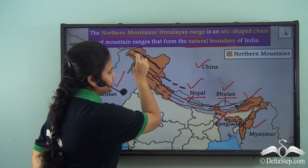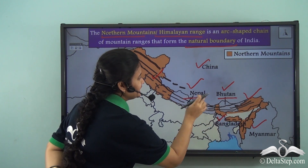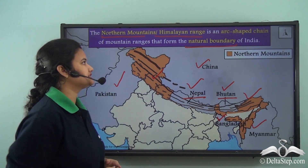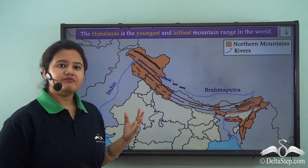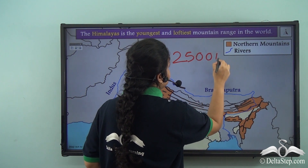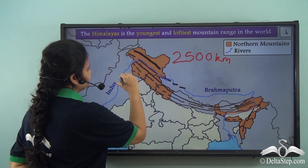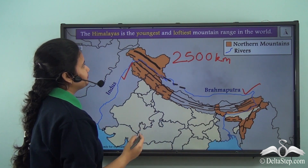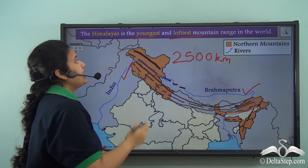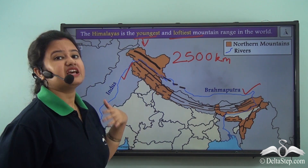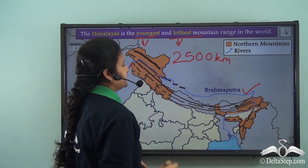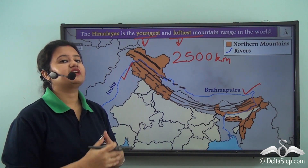This mountain range crosses through the countries of Nepal and Bhutan as well. The Himalayas extend for about 2500 kilometers from the Indus River in the west to the Brahmaputra in the east. The Himalayas are the youngest and loftiest mountain range in the world — youngest meaning newly formed, and loftiest meaning the tallest mountain range in the world.